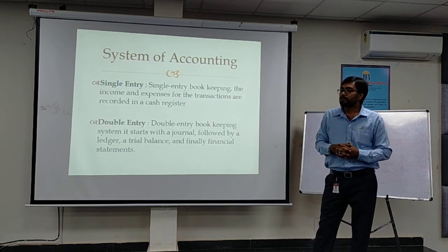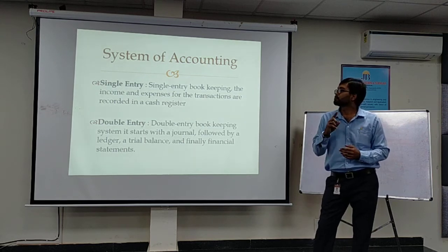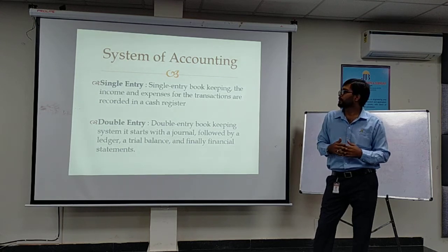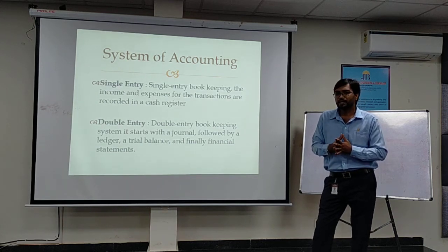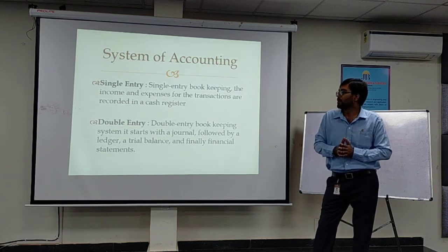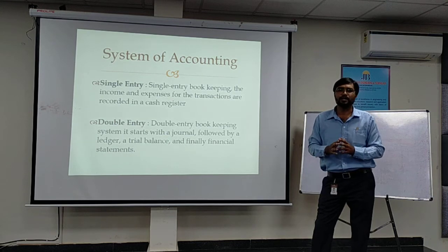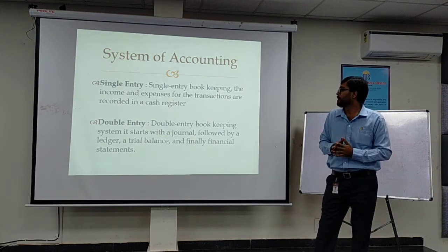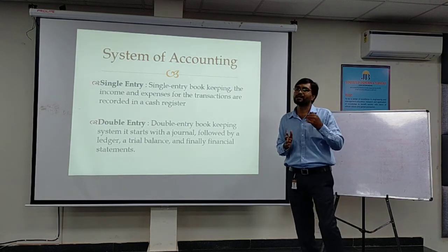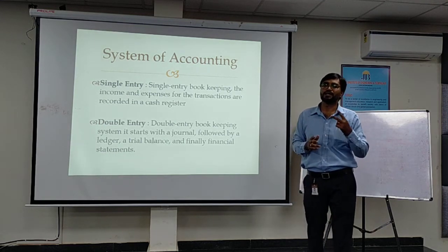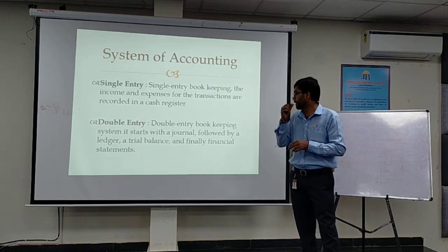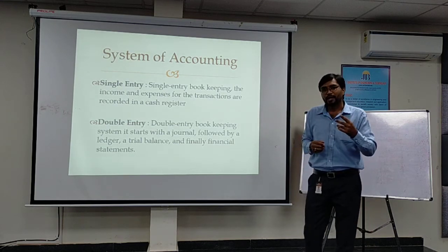Systems of accounting — we have two systems: single entry and double entry. The single entry system is an incomplete type of accounting; we record only income and expenditure in the cash registers. The double entry system is a complete record through which we get accurate results. In the double entry system, we have two entries — debit and credit — and for each debit, there must be an equal credit.